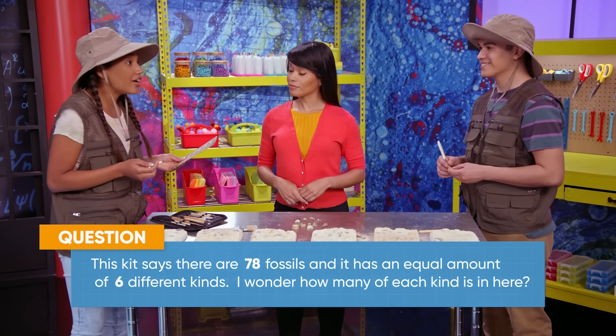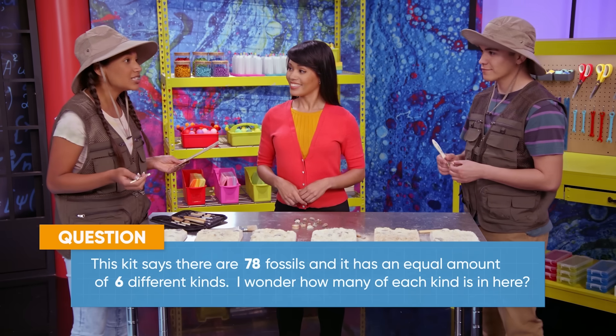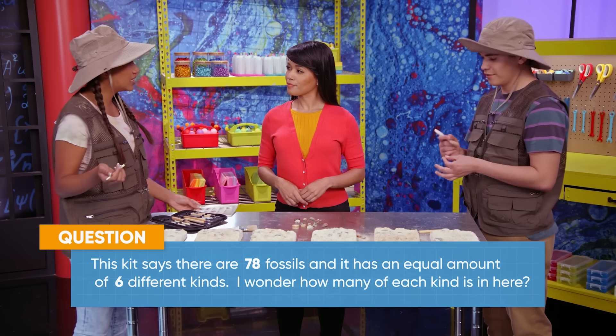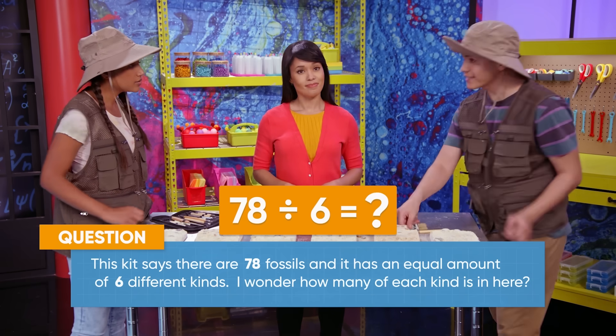This kit says there are 78 fossils, and it has an equal amount of six different kinds. I wonder how many of each kind is in here. To find out, we need to divide 78 by 6.